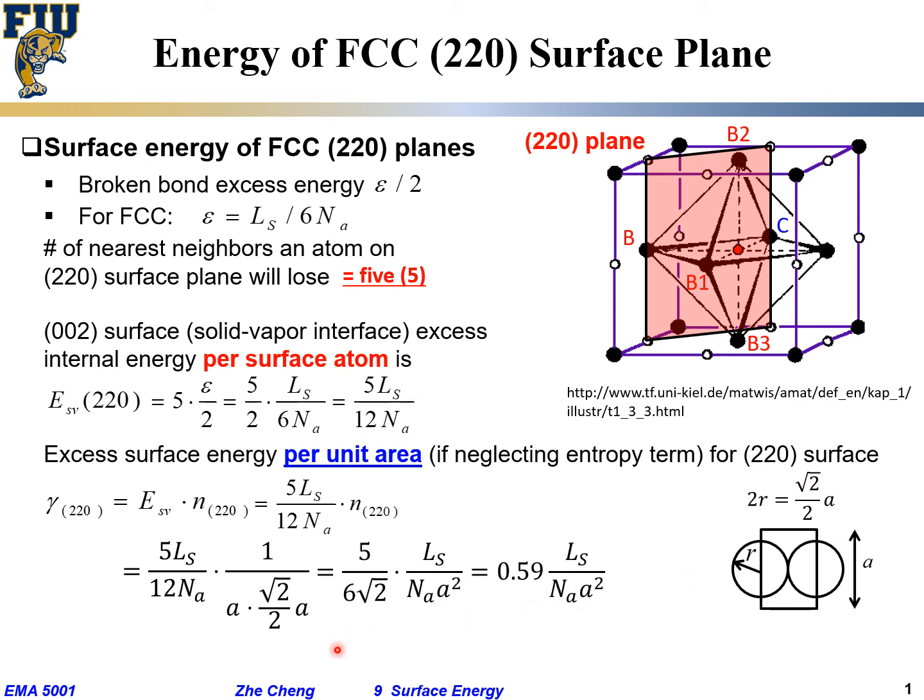So when we work out the math, we can also get a number. That tells us, theoretically, if we expose this so-called (220), we can estimate the surface energy for this crystal surface if it is exposed for this FCC crystal structure.